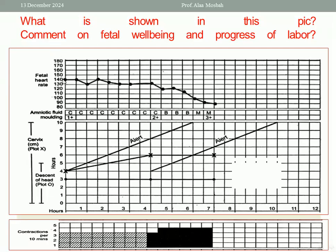So for the first part of the question: this is a partogram for a case in active labor recording labor events. Comment on fetal well-being: there is fetal bradycardia occurring after six hours from the start of the active stage; before that, fetal heart rate was good. What about amniotic fluid? It was clear at the start, then became bloody, then became meconium stained — this means there is fetal distress. What about molding? There is first-degree molding from the start, becoming second-degree, then third-degree molding, indicating cephalopelvic disproportion.